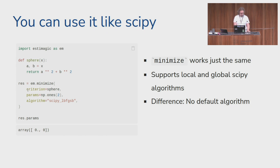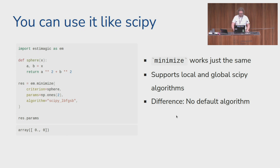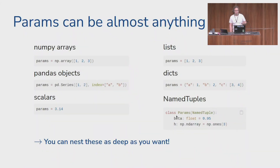Then you can minimize that function by passing it to em.minimize, giving it start values and selecting an algorithm. After this is done, you can look at the optimal parameters, optimal function values, and many more things. One difference from scipy.optimize is that we don't have a default algorithm — there's no one-size-fits-all approach, and a default algorithm can give a false sense of security that you are doing the right thing when you're not.